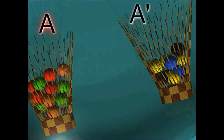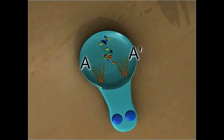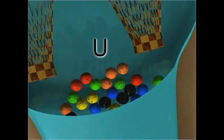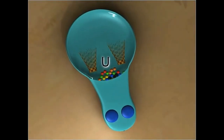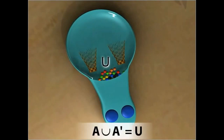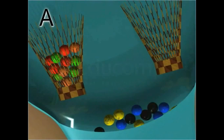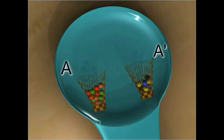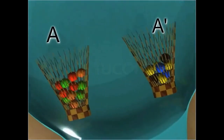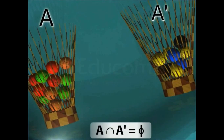If you take the union of set A and complement set A, you get the universal set U containing all the marbles. Thus, A union A complement is equal to the universal set U. Moreover, A and A complement are disjoint sets. Hence, A intersection A complement is equal to phi. These two laws are called the complement laws.